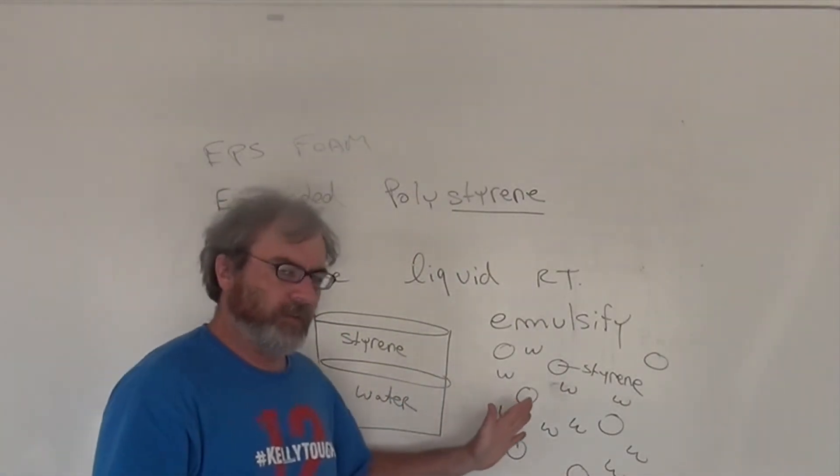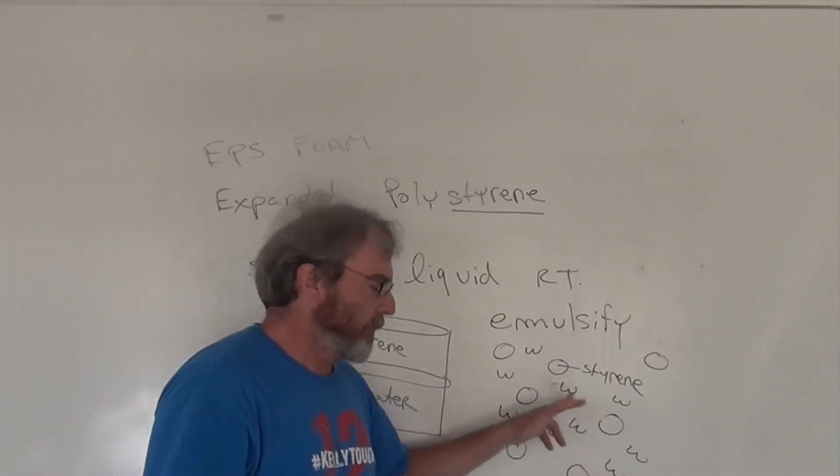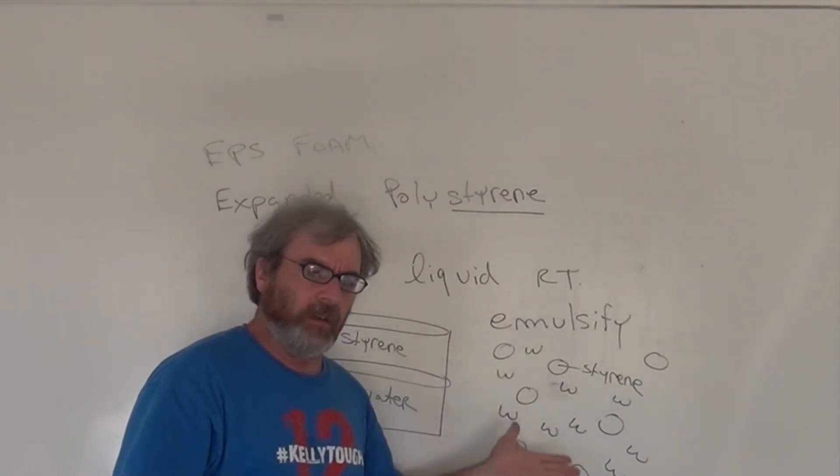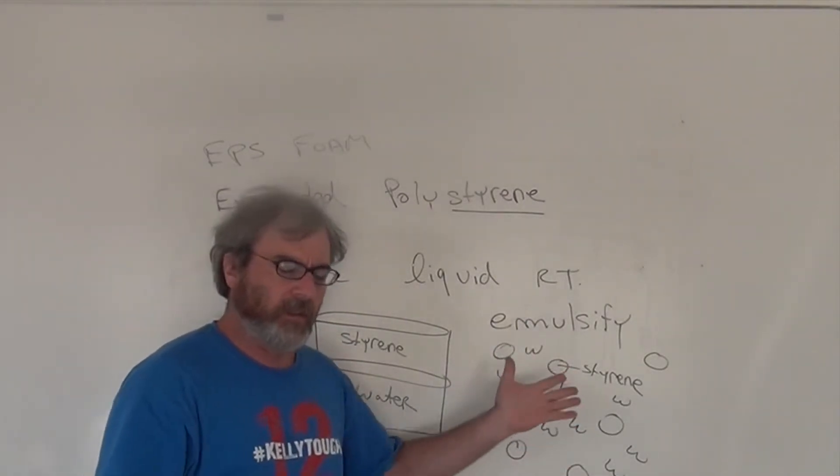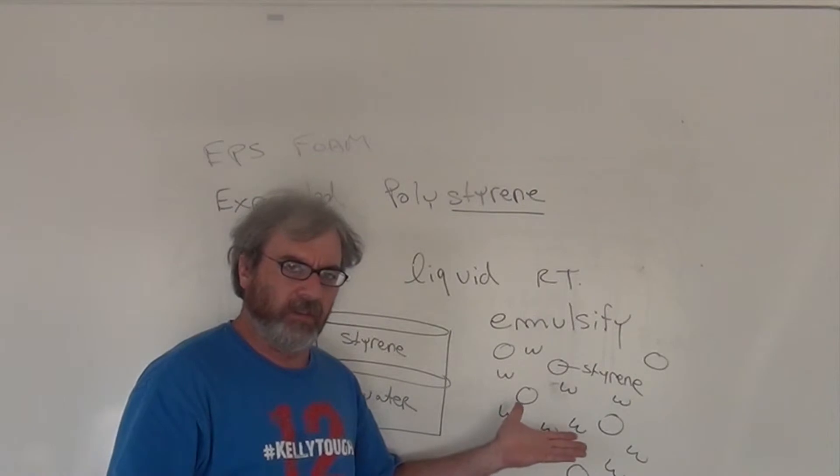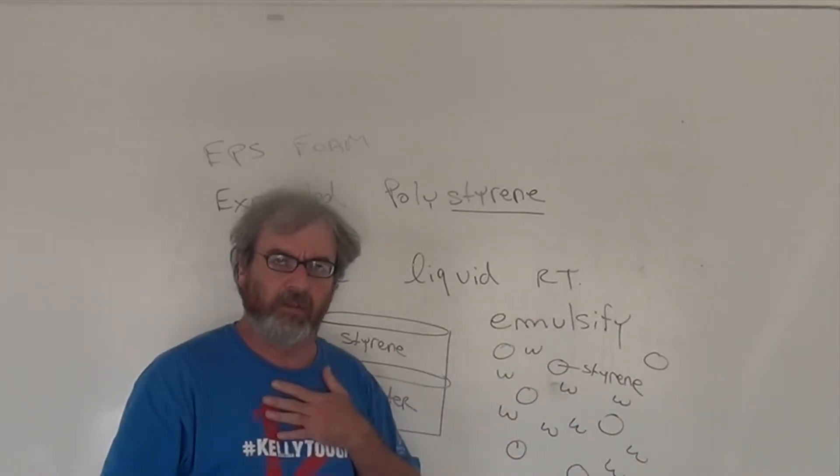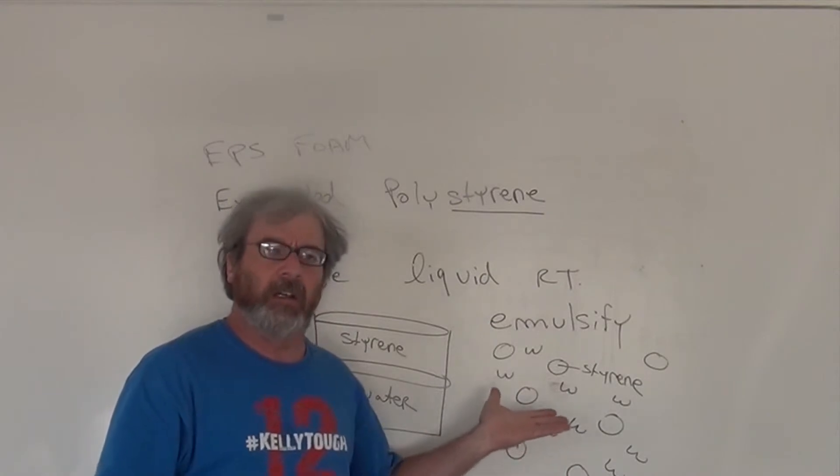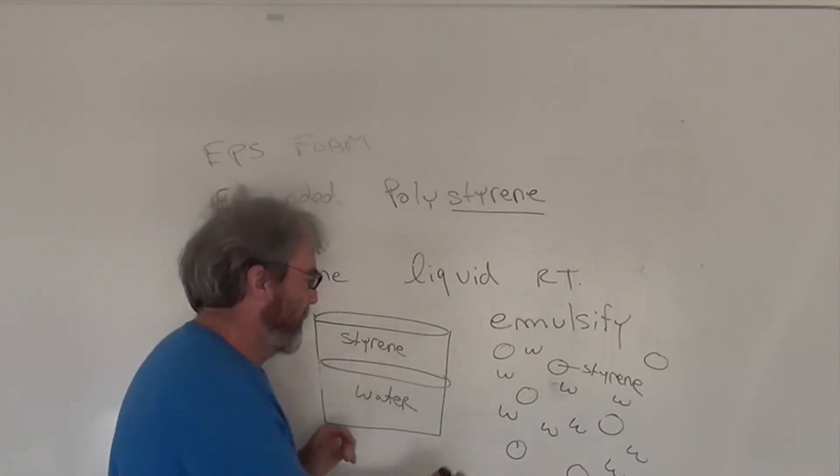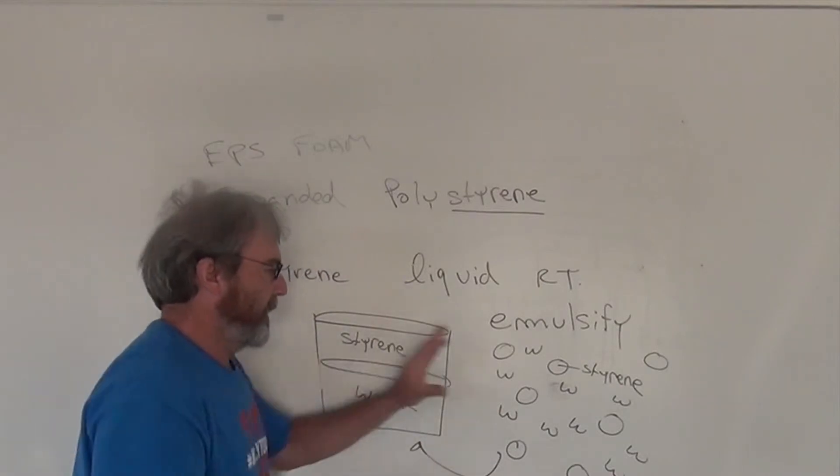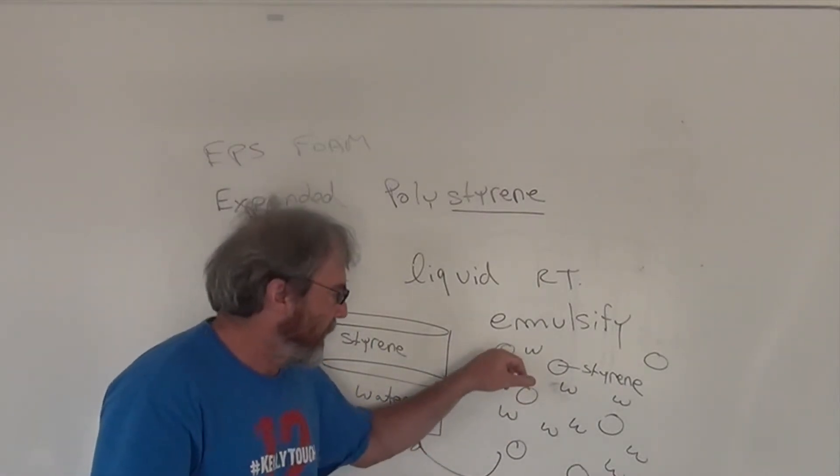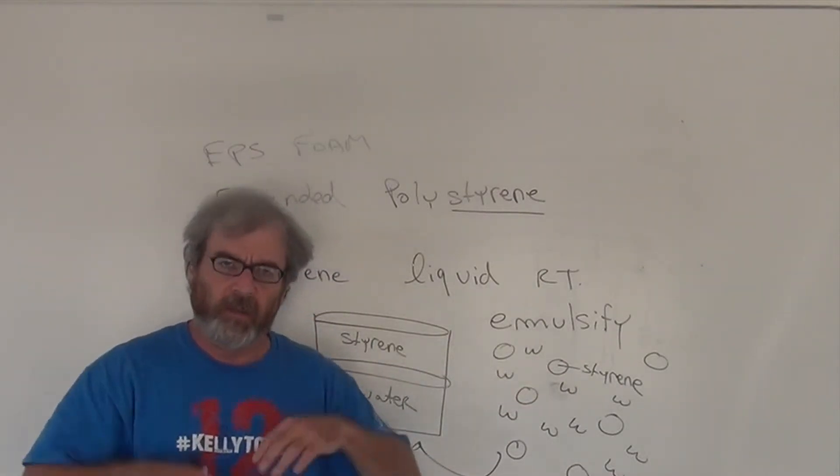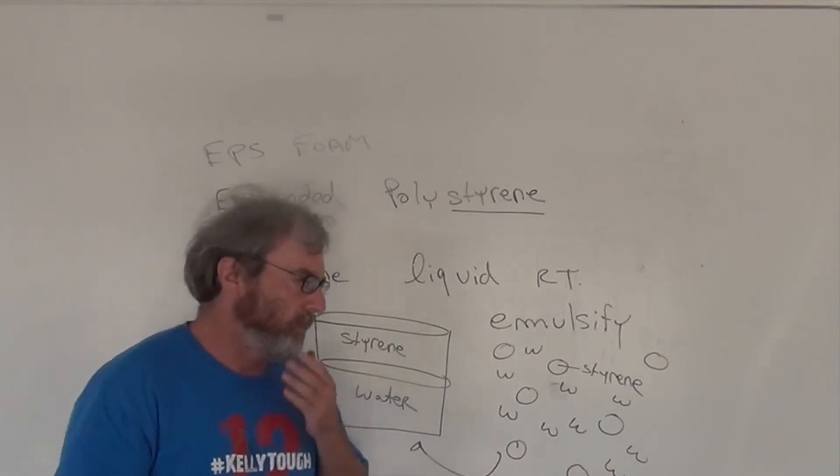And if we wait long enough, these things are going to want to fuse with each other and collect because they like each other, they don't like the water. And because they're less dense than the water, they're going to float and rise to the surface. So if we just leave it for many minutes, we're going to end up going back to this. And we can shake it up again and get these little islands of styrene liquid surrounded by liquid water. It's called an emulsion.